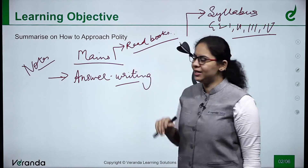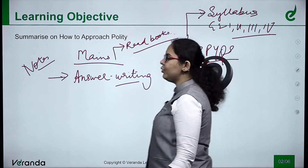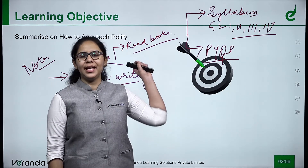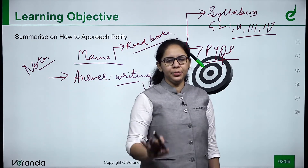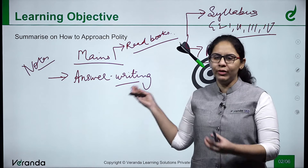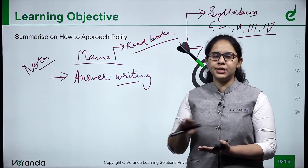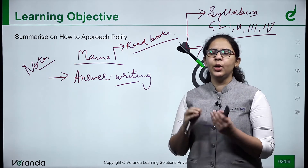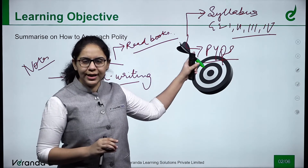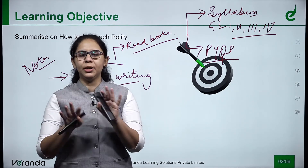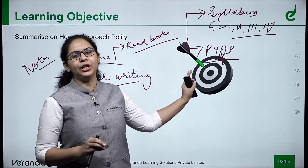The second point of the four-point strategy is PYQs. Here you have to look at questions first, not before reading the books. Why? Because you have already cleared prelims or are on your way to clearing prelims. So the strategy is: read the syllabus, remember the syllabus, stick it on your table or wall wherever you study, and then move to PYQs. Read at least 10 years of previous questions asked in the UPSC mains examination.